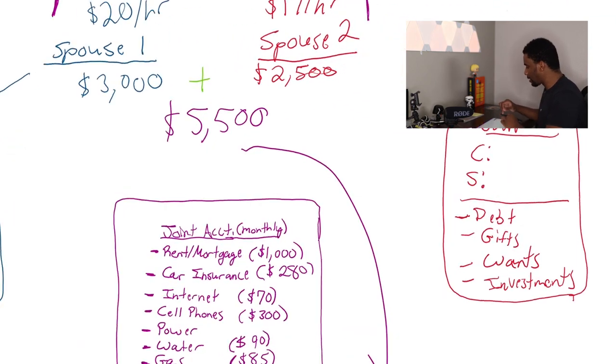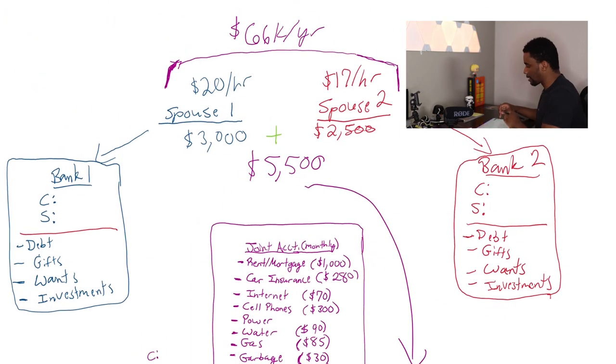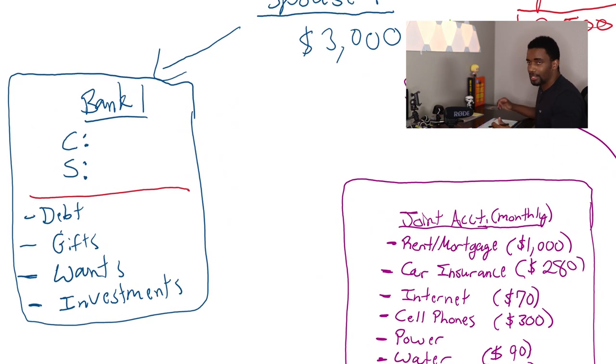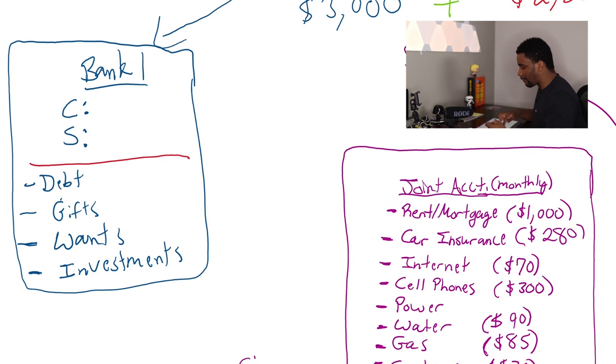So part two of this, spouse number one has his bank account, spouse number two has her bank account or vice versa, whichever one. Now, their banks each have a checking and a savings account. Very important. Very important. And then within this, they have their own things that they're paying for. For example, their debt, their gifts to one another, their wants.